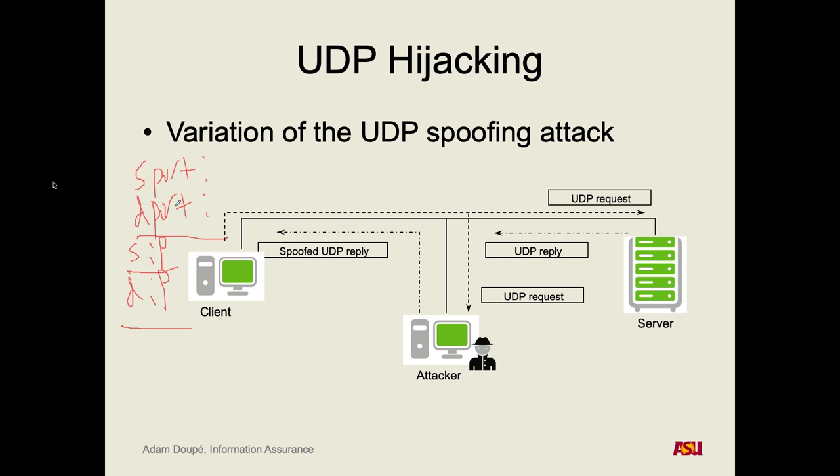So we've essentially tricked this machine into thinking that Google's IP address is somewhere else — maybe somewhere we control. We give it the attacker's IP address, now they connect to us. The user thinks they're going to google.com, but they're really going to the attacker. To send that spoofed reply, the attacker must be on some local network — either the client's, the server's, or any of the hops in between. Or they can get very lucky and guess.